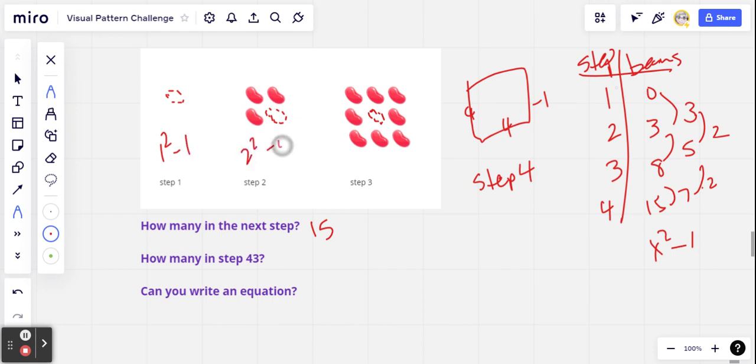In the second one, it's two squared minus one, four minus one is three. And in step three, that's three squared minus one. That's nine minus one. That's eight. That's how many are there. So that's all working. I think we can be confident in our equation here, x squared minus one.